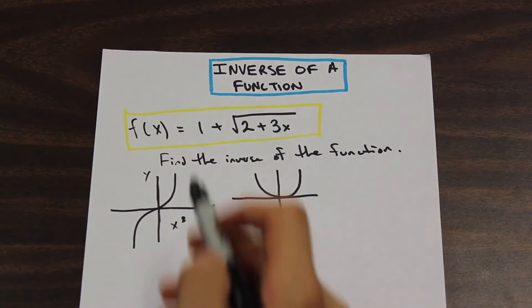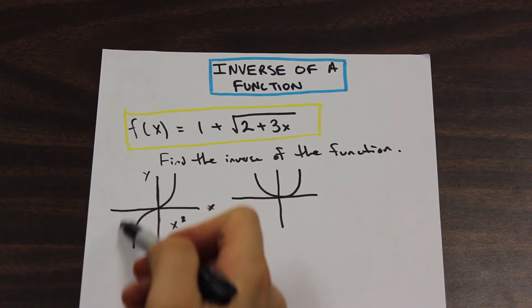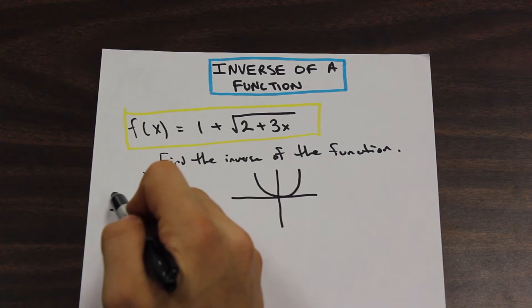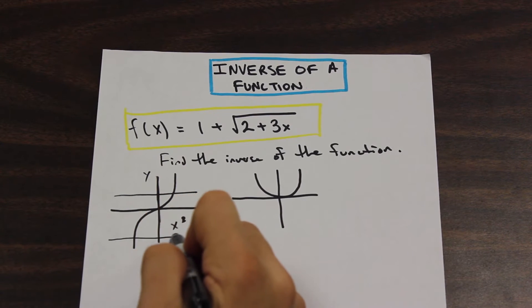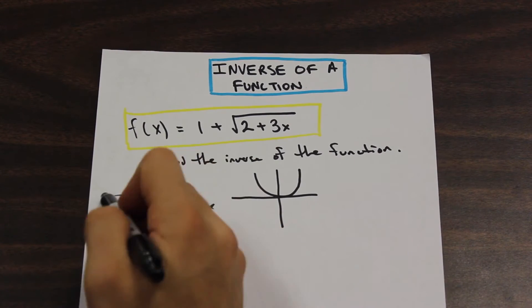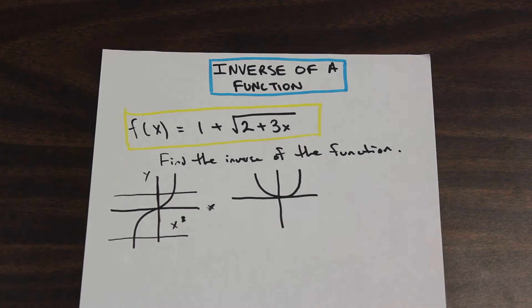And what the horizontal line test is, is you can draw a horizontal line anywhere on the graph, and it doesn't intersect the function twice. So as you can see in this x cubed, anywhere I can put the horizontal line on the graph and I won't touch the function two times. So that means that the function is one to one.